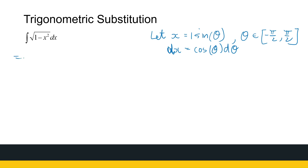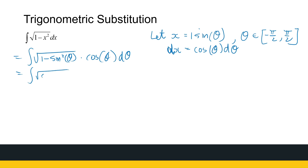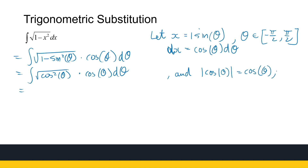Making the substitution immediately, we get the integral of the square root of 1 minus sine squared theta times cos theta d theta. That simplifies to the square root of cos squared theta times cos theta d theta. The square root of cos squared theta is the absolute value of cos theta, which equals simply cos theta, since theta is between minus pi over 2 and pi over 2, where cosine is positive.